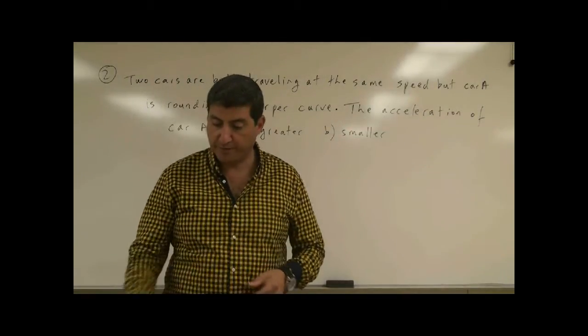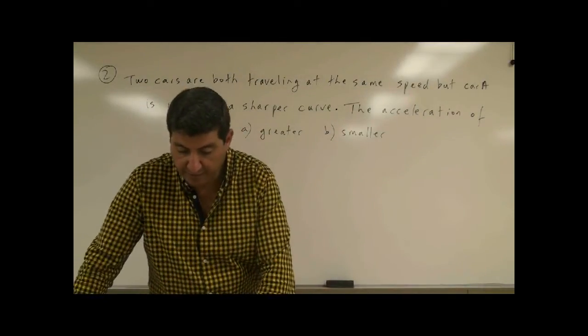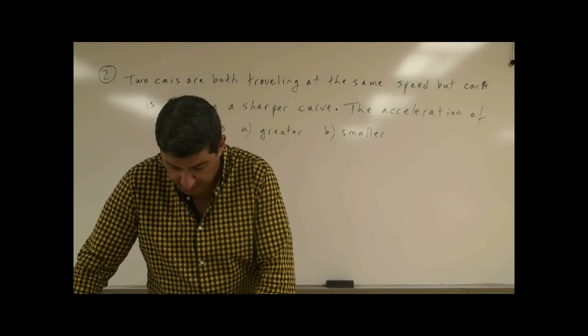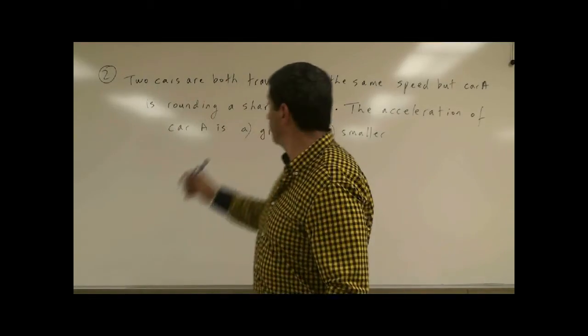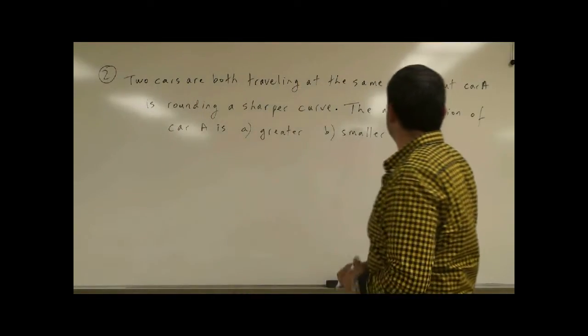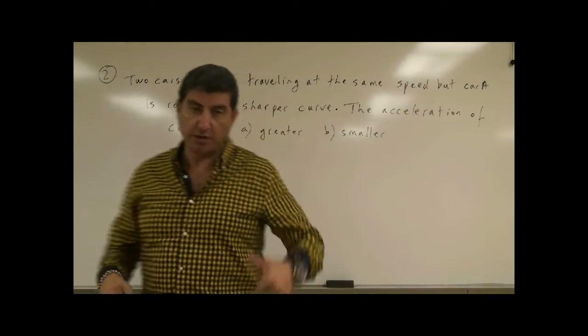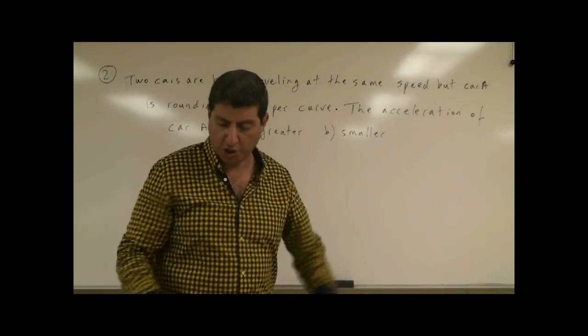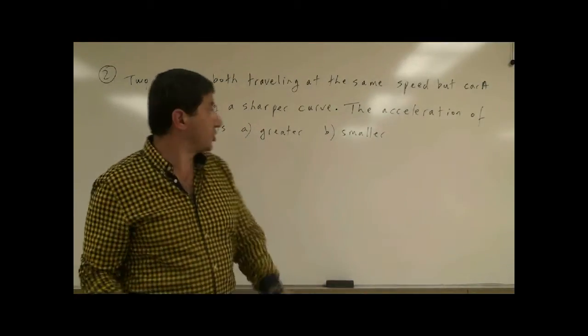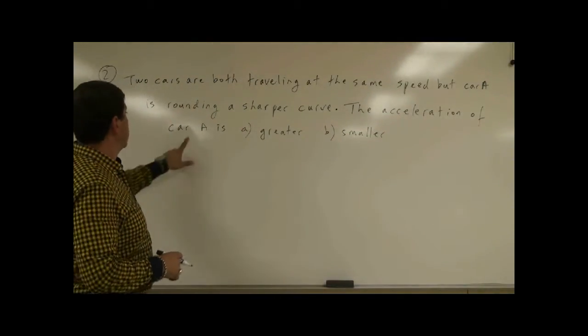We're going to answer question number two from the Physics 11, Chapter 1 review questions. It says two cars are both traveling at the same speed, but car A is rounding a sharper curve. The acceleration of car A is what?